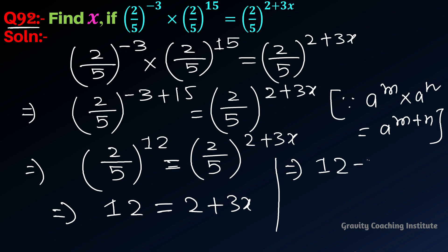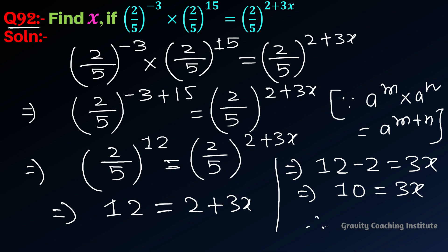12 minus 2 equals 3x. Therefore, x equals 10 upon 3. Answer.